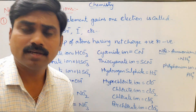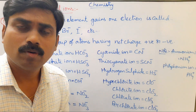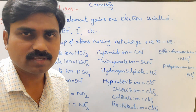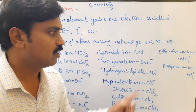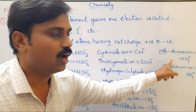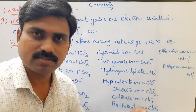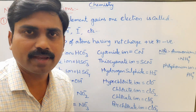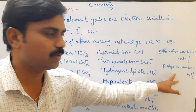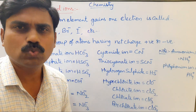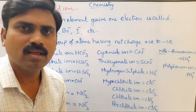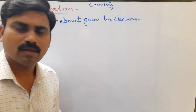There are also two mono-positively charged radical ions: ammonium ion NH₄⁺ and phosphonium ion PH₄⁺. These two are positively charged radical ions.